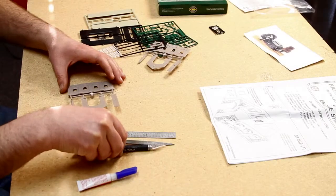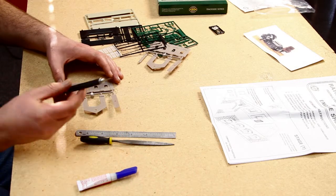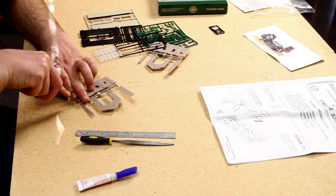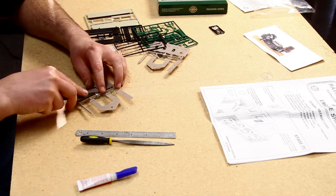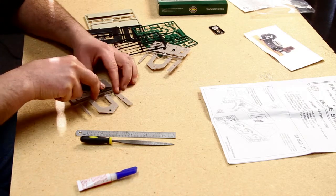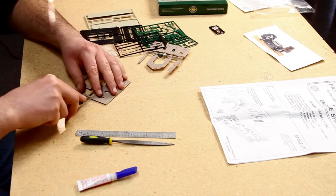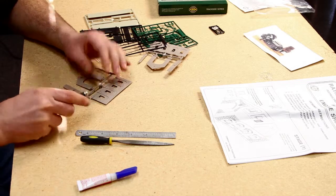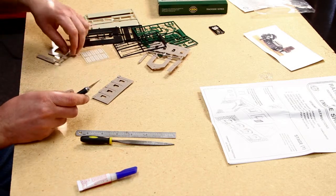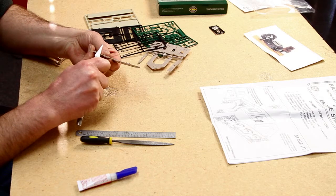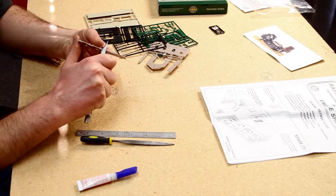First thing you need to do with a very sharp craft knife is very gently cut your walls off your sprue and very gently without cutting yourself just clean them up.